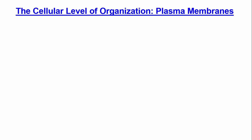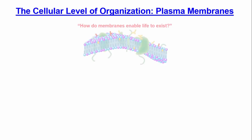Today we're going to begin our discussion on the cellular level of organization, specifically focusing on plasma membranes. This is what a plasma membrane looks like, and it raises the question: how do membranes enable life to exist? Membranes allow for a barrier to separate molecules from one side to the other, creating a concentration gradient — a difference in concentration of molecules — which allows movement across the membrane and enables chemical reactions to occur.